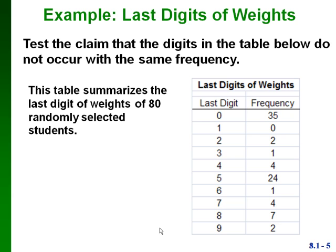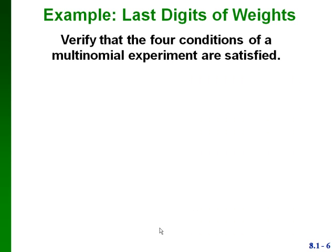If they were actually measured, the last digits should all have the same proportions — equally distributed between all ten possible last digits. Looking at our actual data in the frequency table, you can see that the 0 and the 5 as last digits have a lot more than the other digits, so it looks pretty likely that these weights were reported. But we're going to actually do a hypothesis test to confirm that.